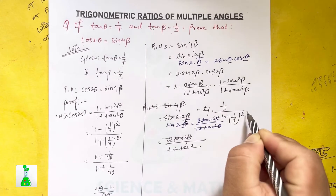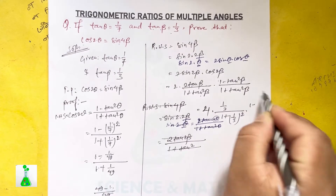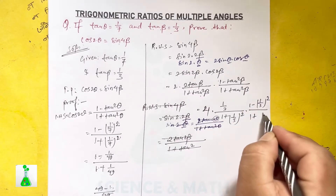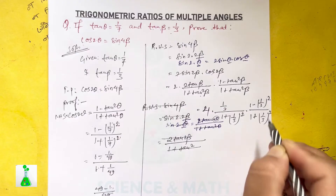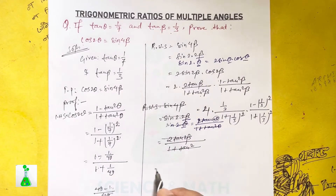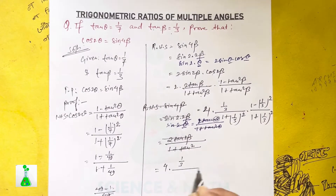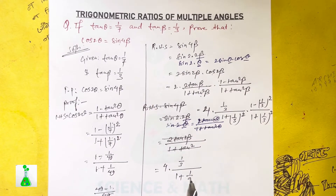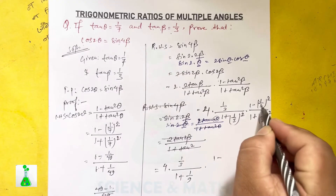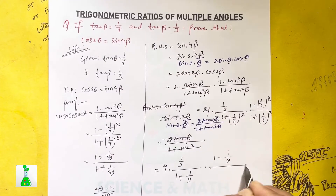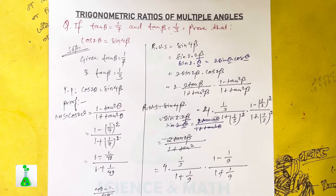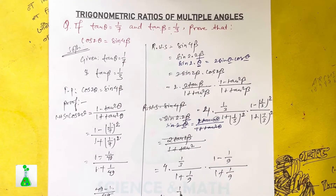Substituting tan beta equals 1 by 3: sin 4 beta equals 4 times (1 by 3) times (1 minus (1 by 3) squared) divided by (1 plus (1 by 3) squared) squared. That is 4 into 1 by 3 times 1 minus 1 by 9 divided by 1 plus 1 by 9.